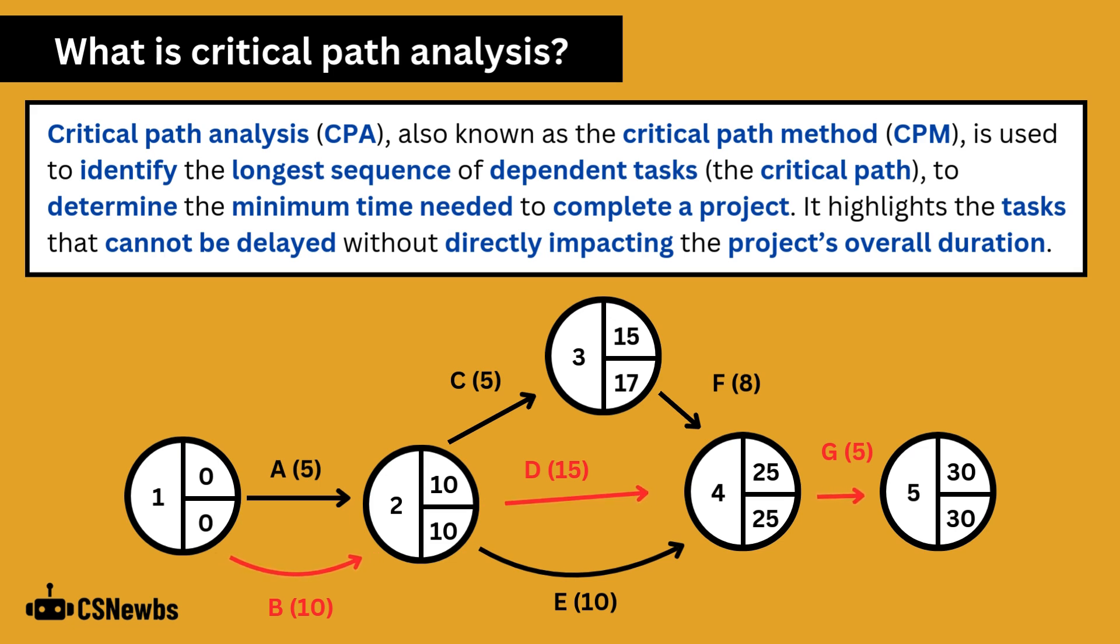It highlights the task that cannot be delayed without directly impacting the project's overall duration. Critical path diagrams can have many different looks. We'll explain the example below shortly, but in an exam it may be a simpler version that you see, without all of the numbers except the expected activity duration, as long as it identifies the longest sequence of dependent tasks.